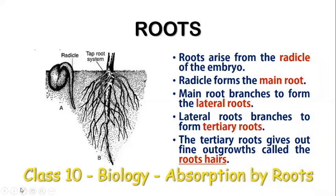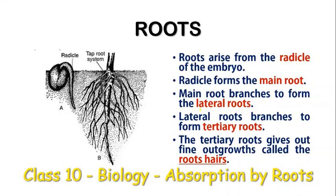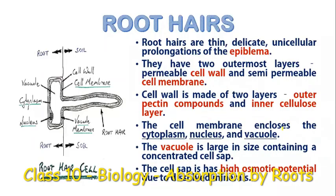Roots generally develop from the radicle of the embryo. The radicle gives rise to the main root. The main root forms branches which are called lateral roots. The lateral roots branch and form the tertiary roots, and these tertiary roots give rise to fine outgrowths which are known as root hairs.